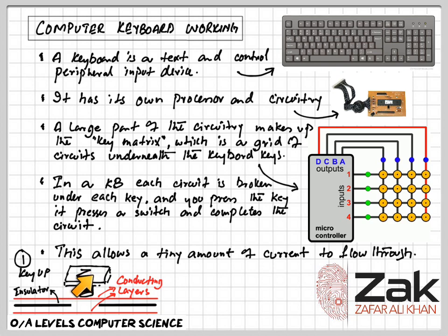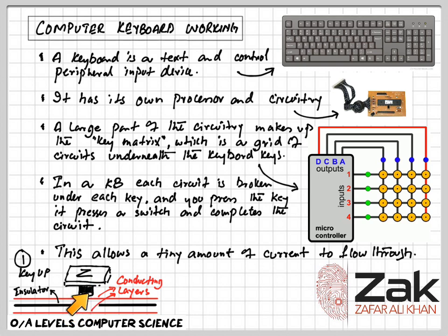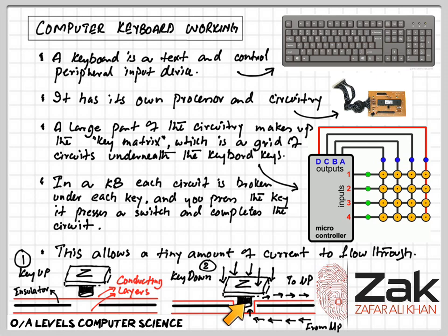For example, under a key there are two conducting layers — one bringing in the current and the other taking out the code or signal from the keyboard. These two layers are separated by an insulator in between with a gap, so that when the key is pressed, it presses the top conductor layer against the bottom layer. When they meet, the circuit gets completed. As you can see, when the key is up the circuit is incomplete, and when the key is down the circuit is completed, sending the signal out to the microprocessor.